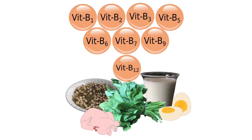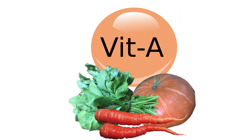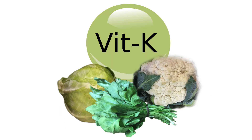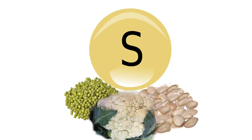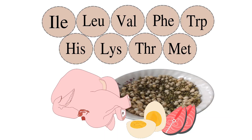Vitamins B, C, A, D, E, and K are type 1 nutrients as well. Sulphur, chlorine, and protein or essential amino acids are type 2 nutrients.